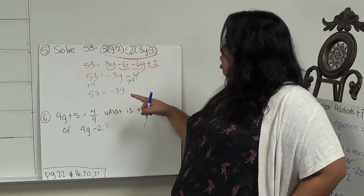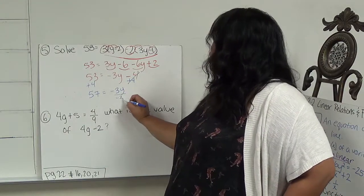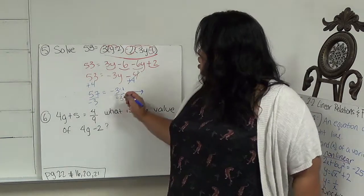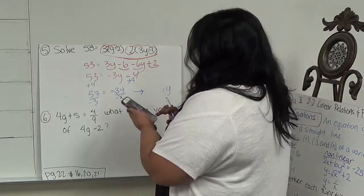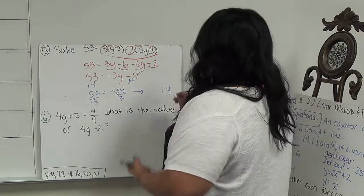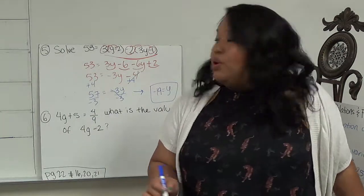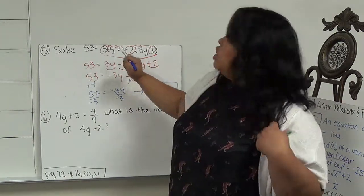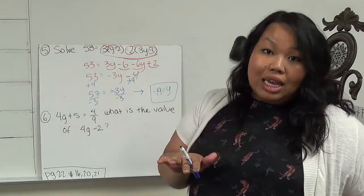Negative 3 is being attached to y by multiplication. So the opposite is division. And then this cancels out, leaving me with just y on this side. And then 57 divided by negative 3 gives me a negative 19. And this is an easy check. I should be able to put negative 19 in for each of the y's, work it out with the order of operation, and get 53 on both sides of the equal sign. Now, if I plug it back in, and that's not the case, something went wrong.